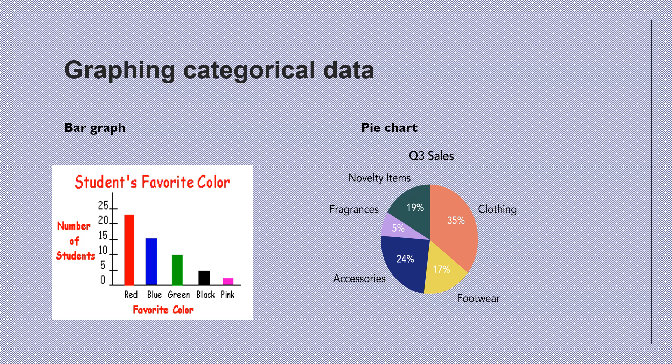There are two ways of representing categorical data. The first graph is a bar graph. For example, if I have individuals as students and I am collecting information from them about their favorite colors, I can represent that data using a bar graph as shown in this diagram, with the number of students for their favorite colors: red, blue, green, black, pink, and so on. So the individual is a student and the variable is the favorite color.